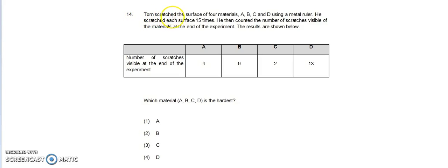Question 14. Tom scratched the surface of four materials, A, B, C and D, using a metal ruler. He scratched each surface 15 times. He then counted the number of scratches visible of the materials at the end of the experiment. The results are shown below.